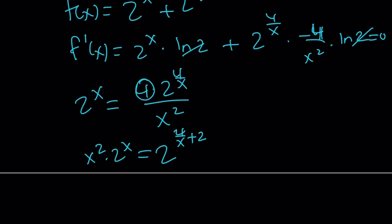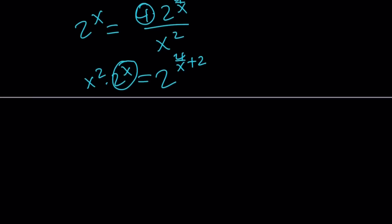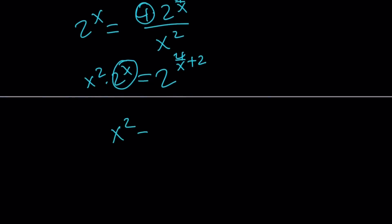And you can write it as 4 plus 2x over x if you want. Or you can divide both sides by 2 to the x. And that's going to give you x squared equals 2 to the power, in other words, we're kind of subtracting x from this because we're dividing by 2 to the x. So that's going to give us 4 over x minus x plus 2. Anyway, this is what we got. It doesn't give us a really nice solution from here. Maybe there's a way to find it. I don't know, but I just want to show you the minimum values of our function.